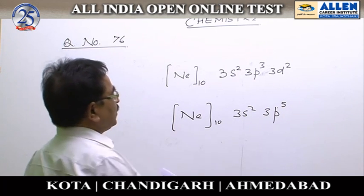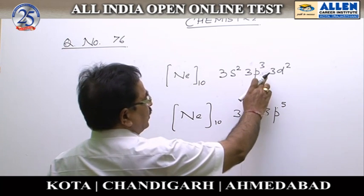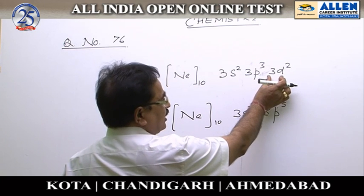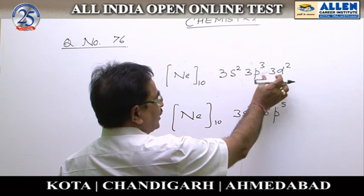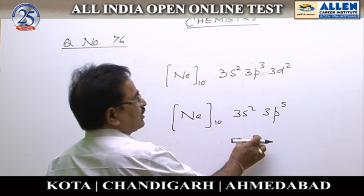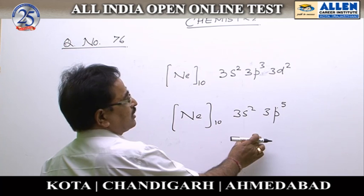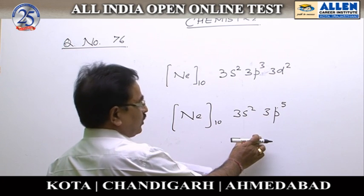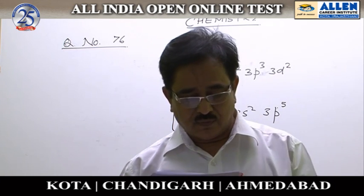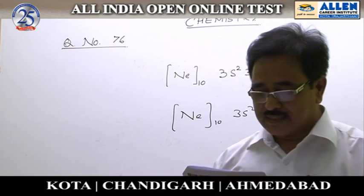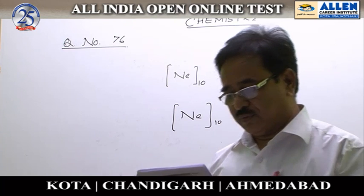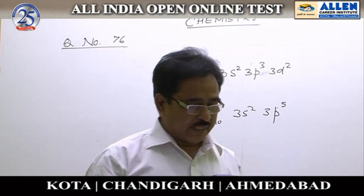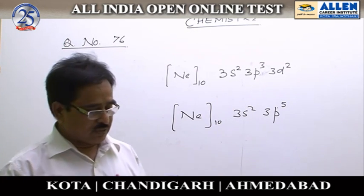Two electrons were excited into D. Therefore, the configuration represents the second excited state of chlorine. The fourth option is 'second excited state of chlorine,' so the correct answer is option 4.